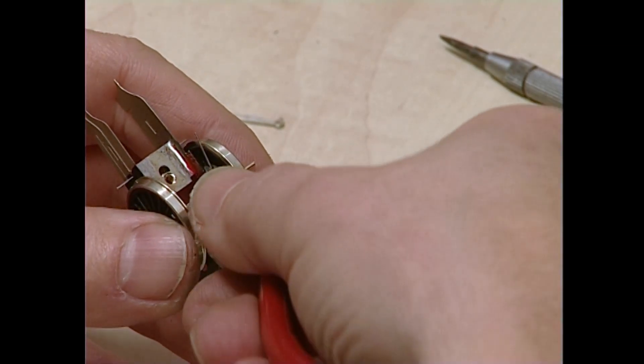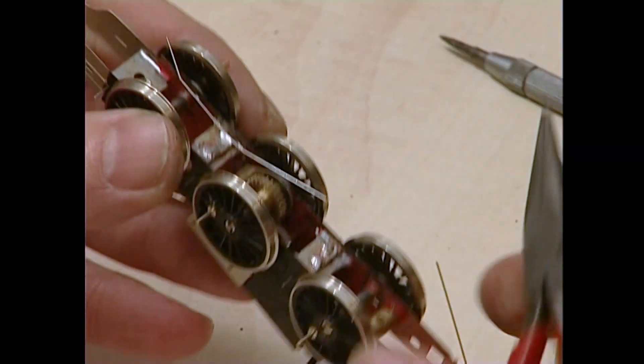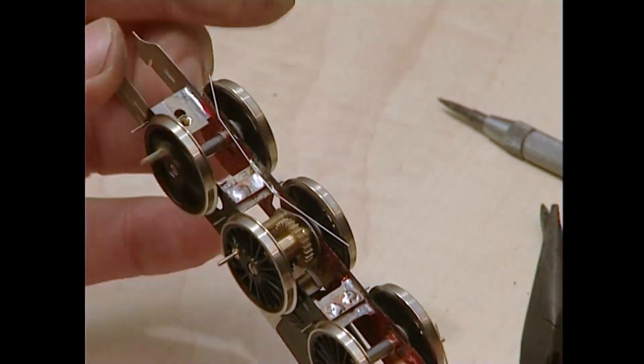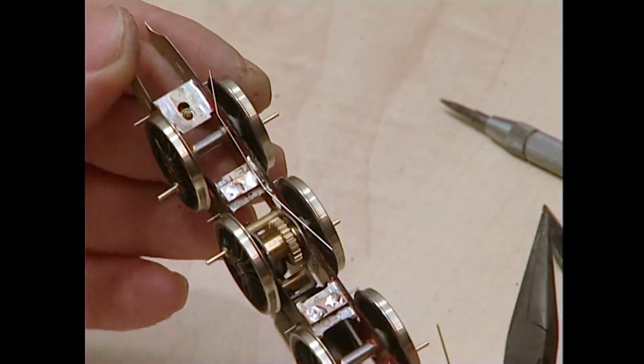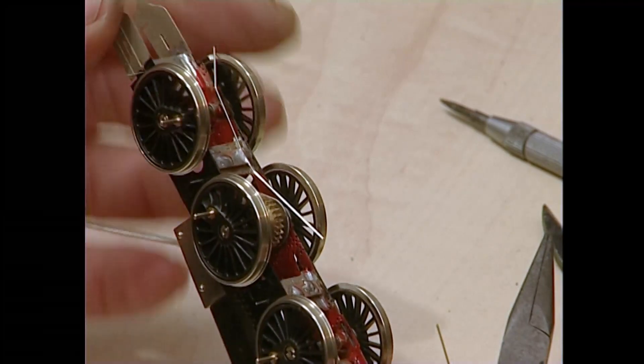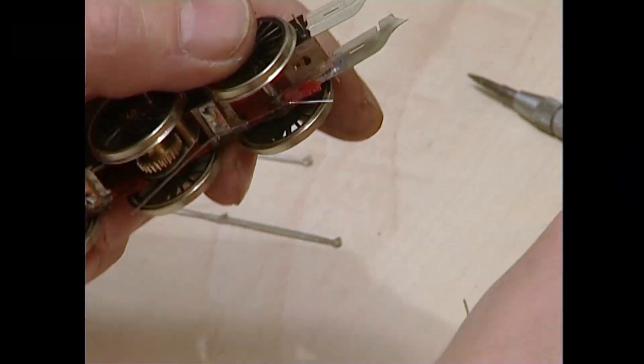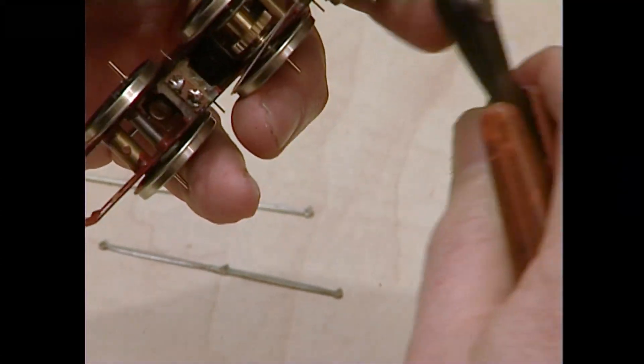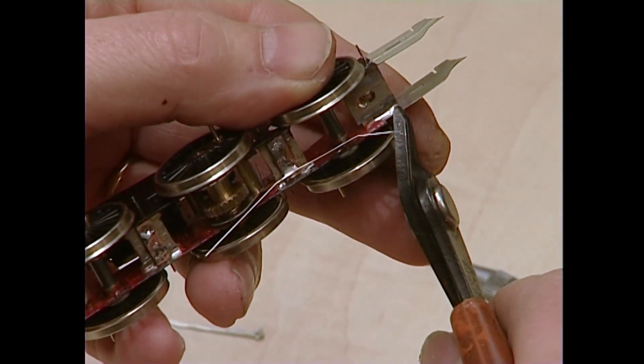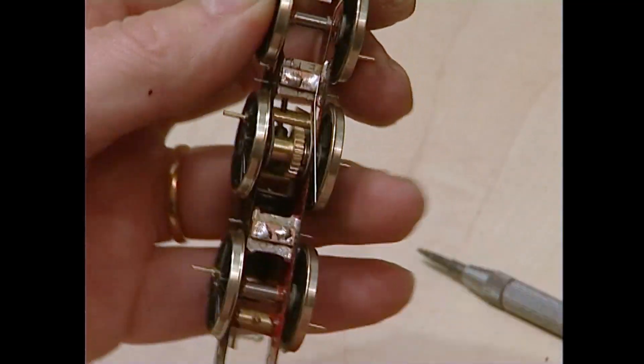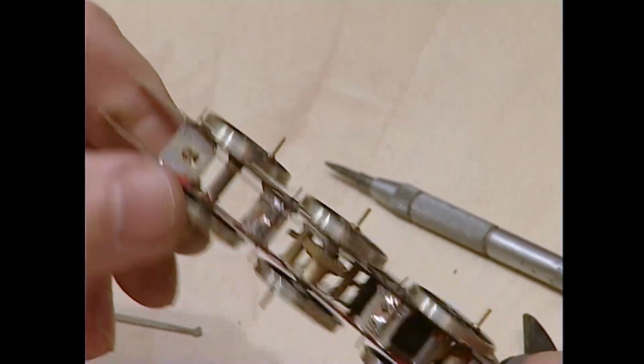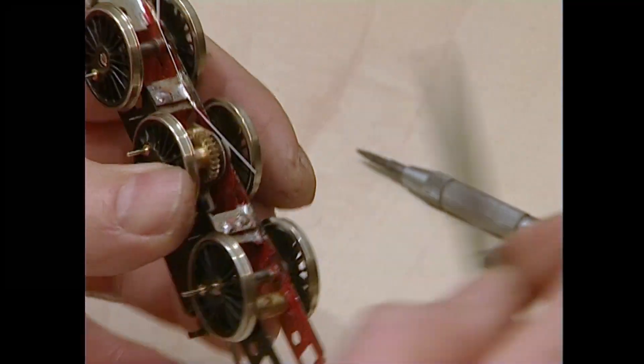Now, just snip off the excess. Getting the tension right on these is a matter of experience and feel. Just bend it so that it touches the wheel. There should be friction and enough just to move the wheel.